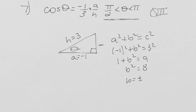So b equals plus or minus the square root of eight, which actually simplifies to two root two.